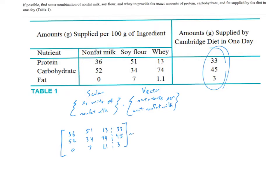36, 52, 0, 51, 34, and 7, 13, 74, 1.1. Augment that with how much we need for this Cambridge Diet. So that's what the setup looks like. I'm not going to go through the row operations. You should take this as an opportunity to see if you can put your matrix in reduced row echelon form efficiently on your TI-89s.